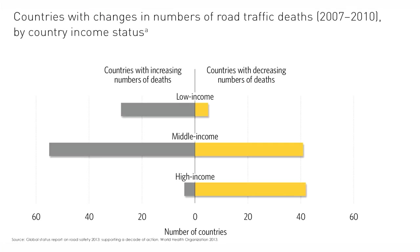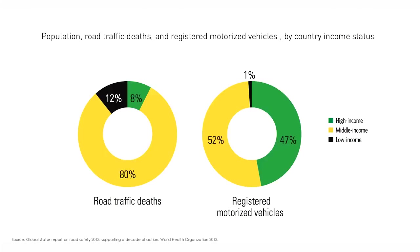In high-income countries, some progress is being made through a decline in road traffic accident-related death rates. But in low- and middle-income countries, death rates are rising. While vehicular numbers are almost comparable across these two income groups, deaths are far, far higher in the middle-income group.